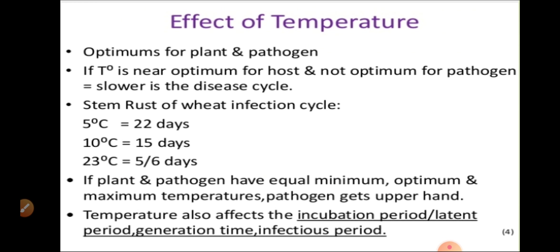If temperature is near optimum for the host but not optimum for the pathogen, the disease cycle slows. If temperature is maximum and not optimum for the pathogen, the disease cycle growth slows down — for example, stem rust of wheat.